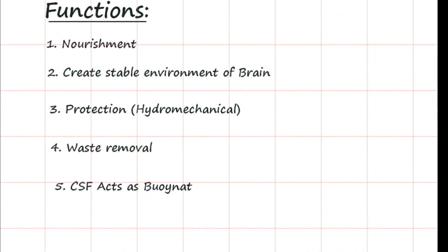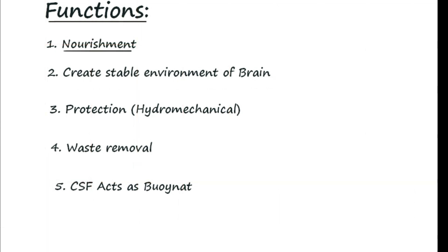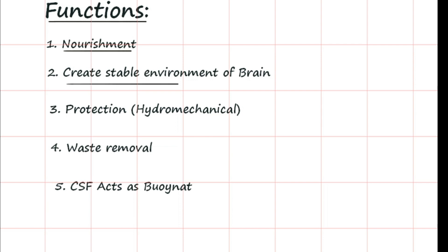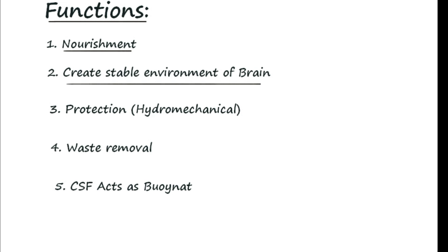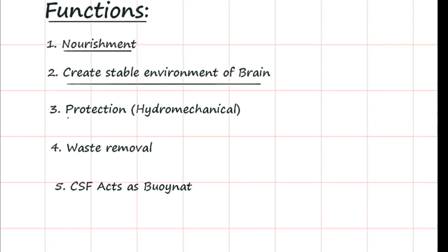Coming to the functions of the CSF: the first and foremost is nourishment. The CSF provides the best nourishment to the brain and is the only source of nourishment to the brain. Secondly, it creates a stable environment to the parenchyma or brain tissue, facilitating normal functional homeostasis to the central nervous system. The third function is protection.